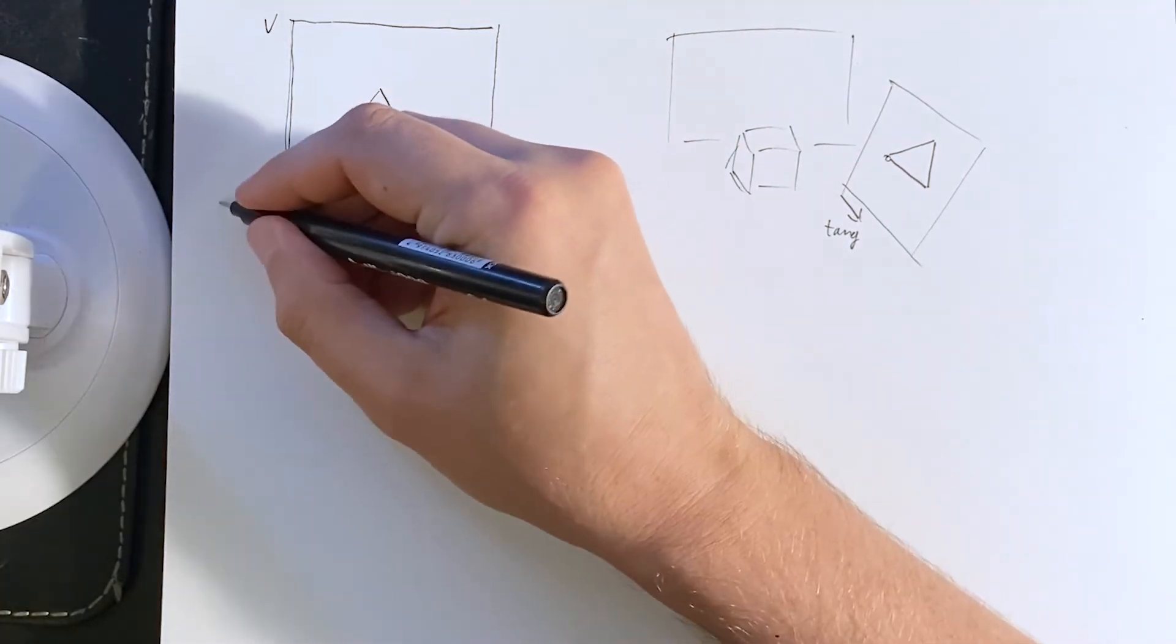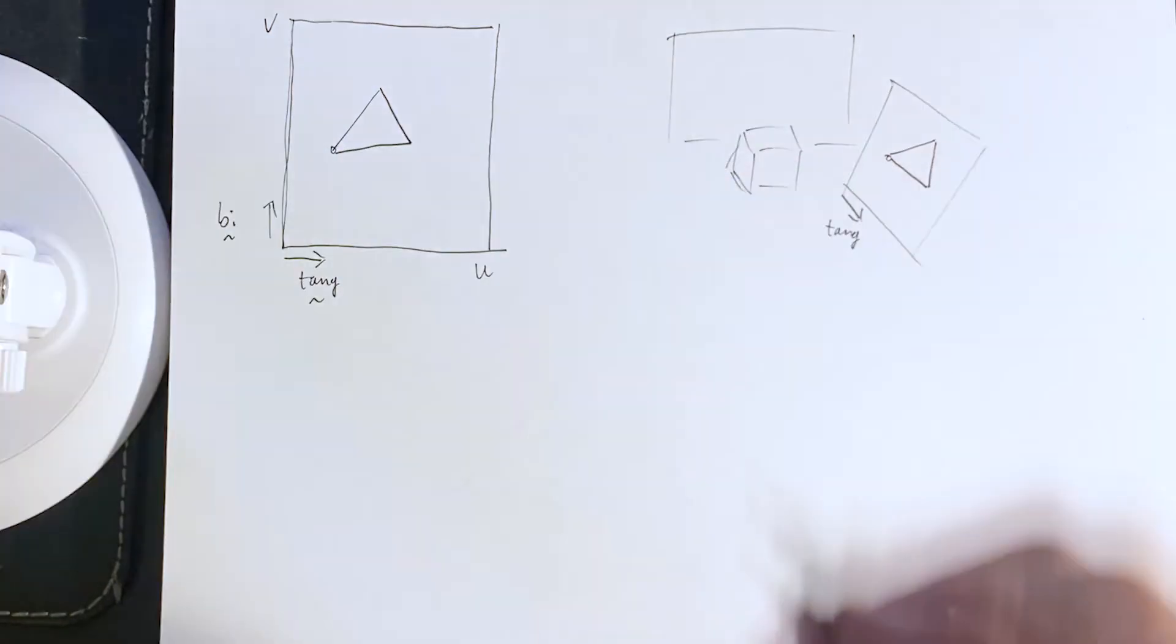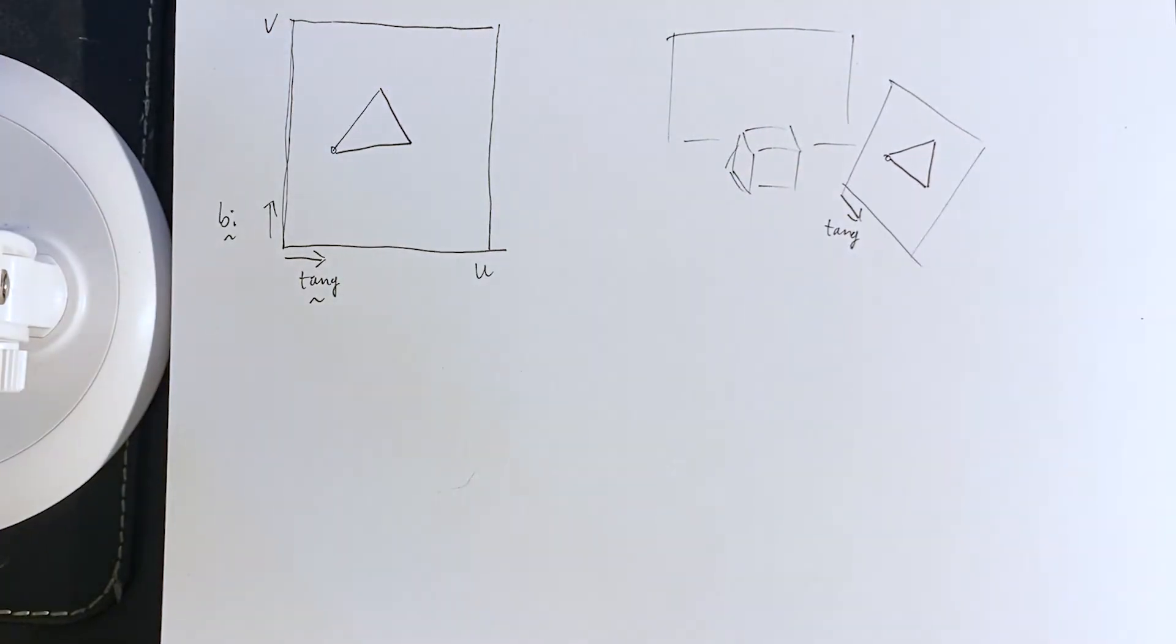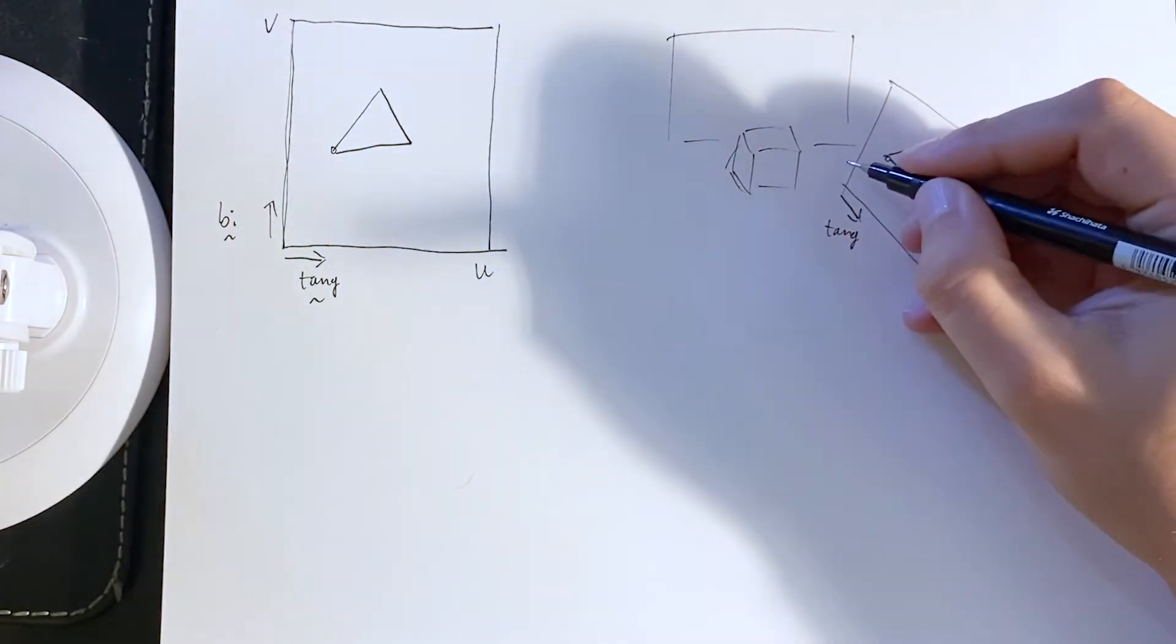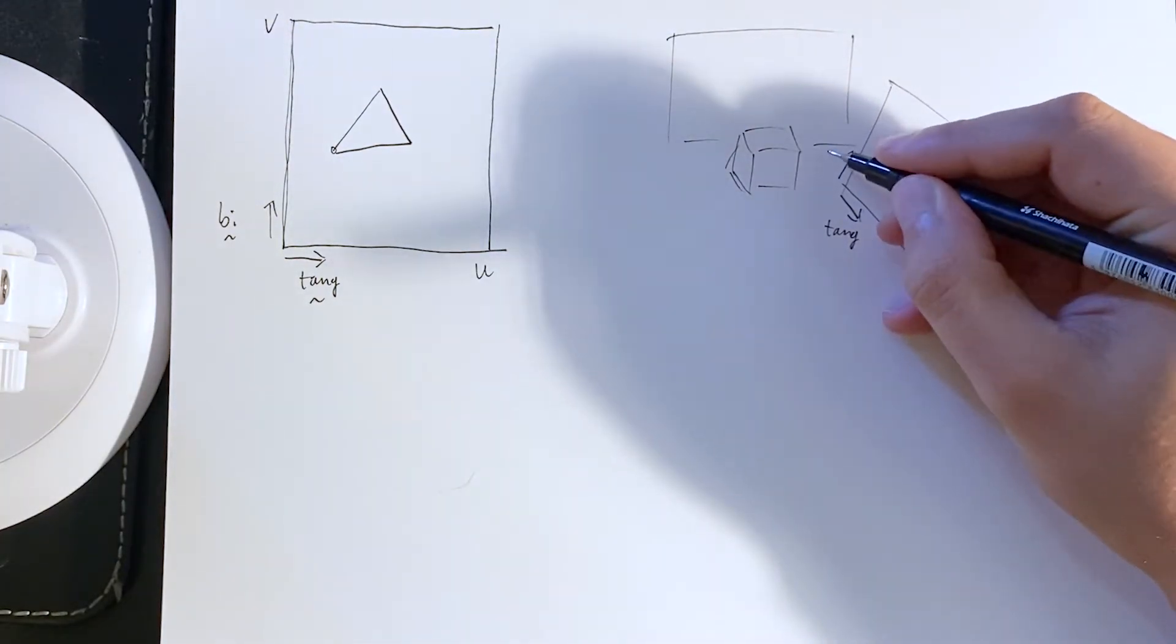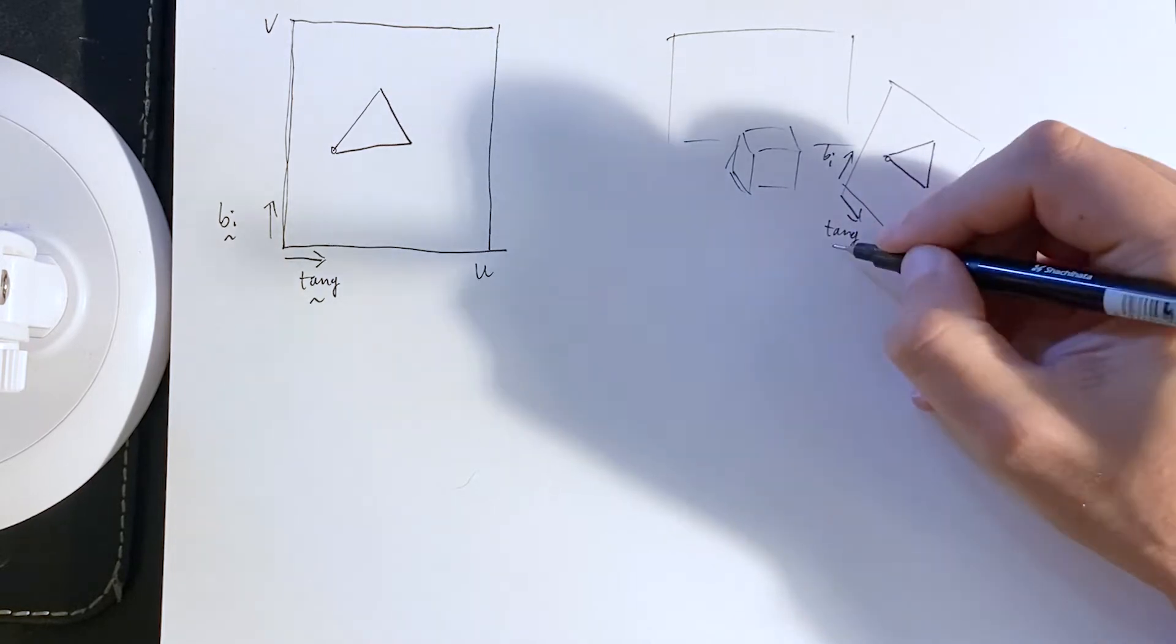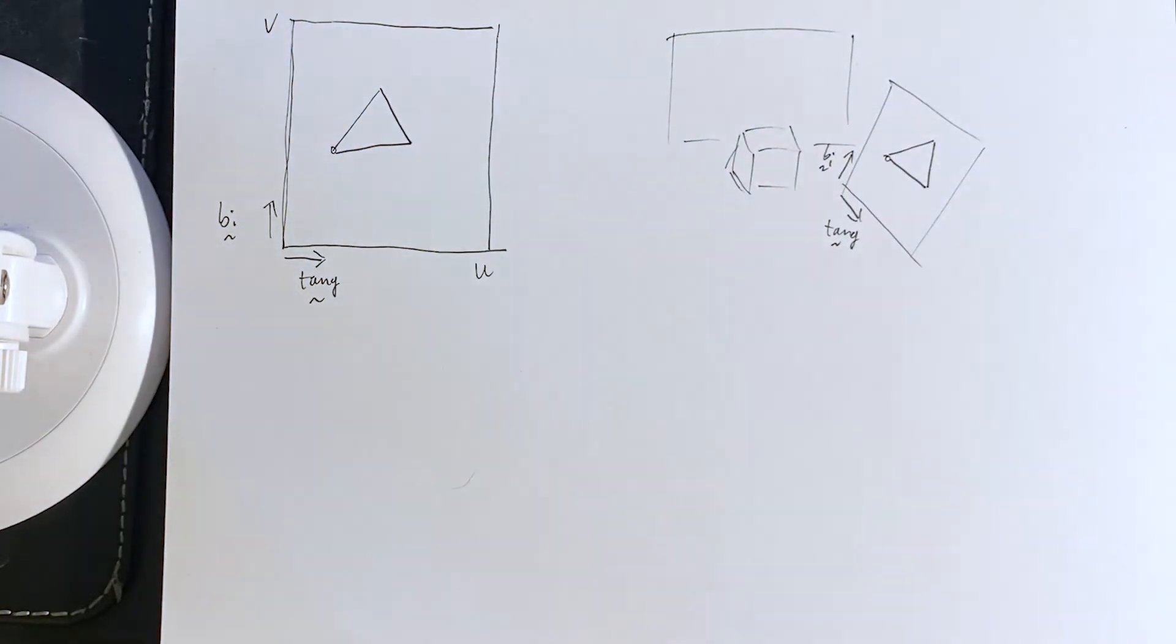Or, similarly, we have a bitangent vector, which is another tangent, which is just parallel with the V texture coordinate. We want to know what does that bitangent direction mean in the world space.